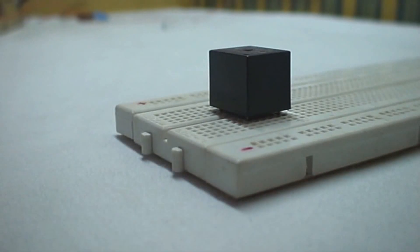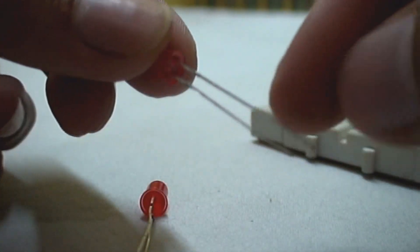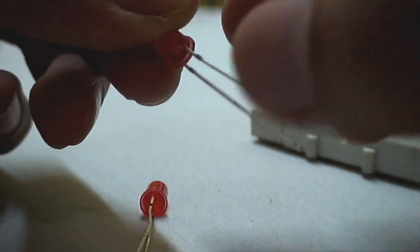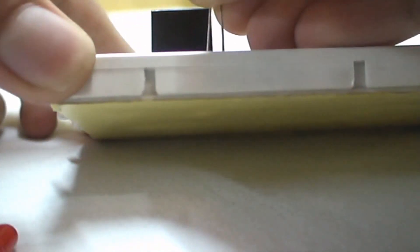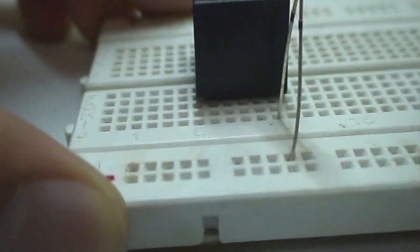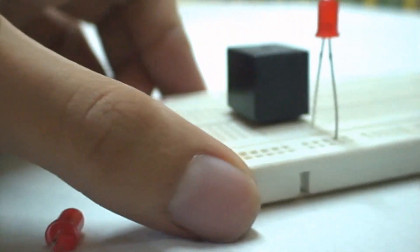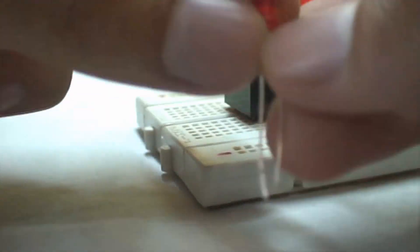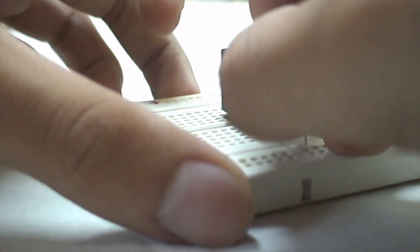Next we need to insert the two LEDs on the breadboard. The longer part of each LED is the anode and the shorter part is the cathode. We connect the anode of the first LED to normally open and the cathode to the negative rail of the breadboard. We connect the anode of the second LED to normally closed and the cathode to the negative rail of the breadboard.